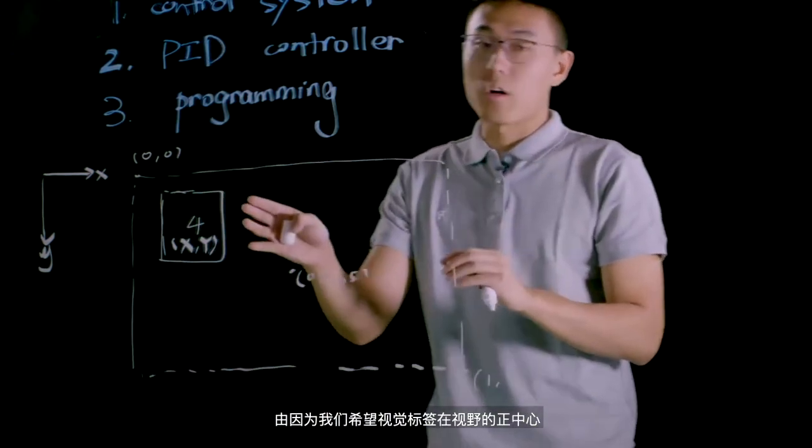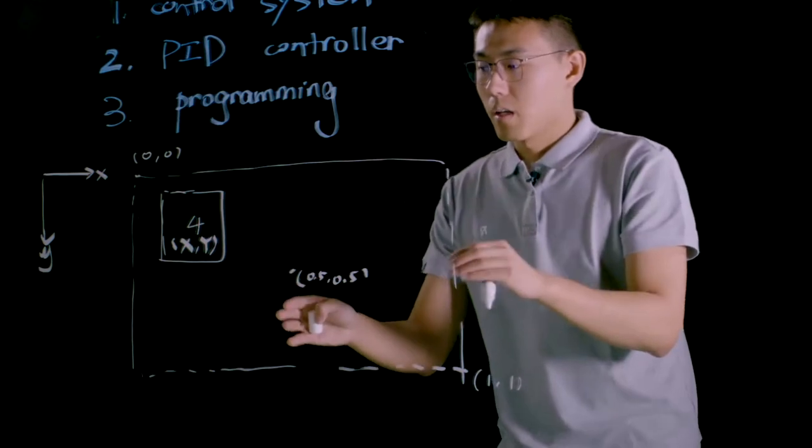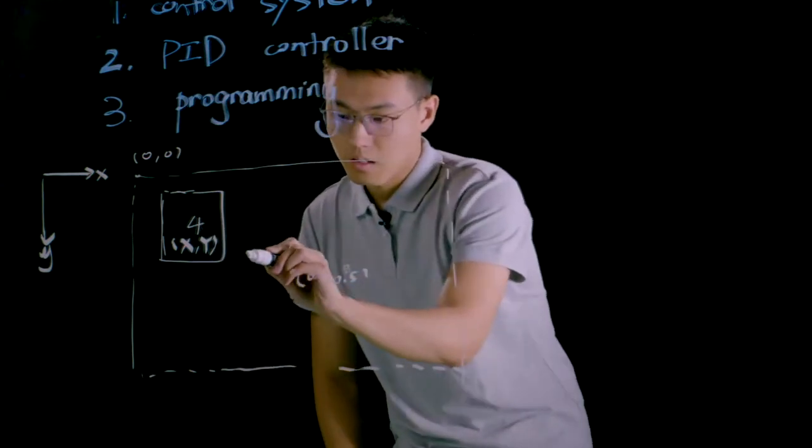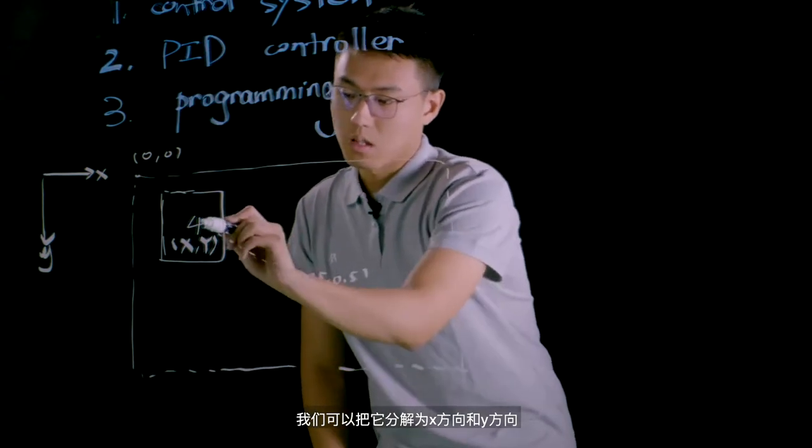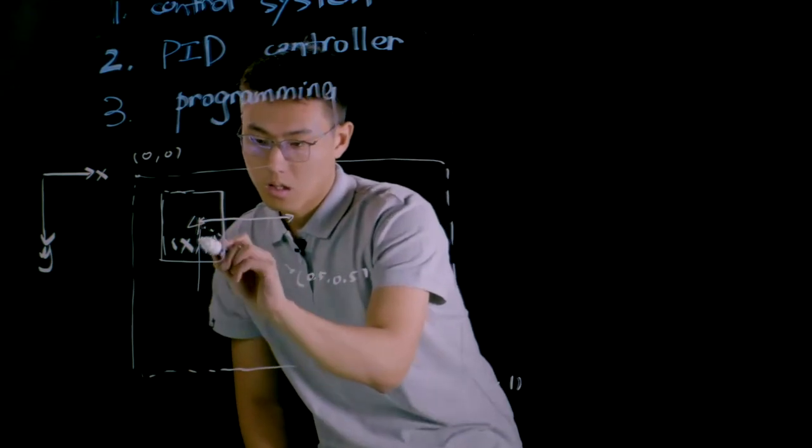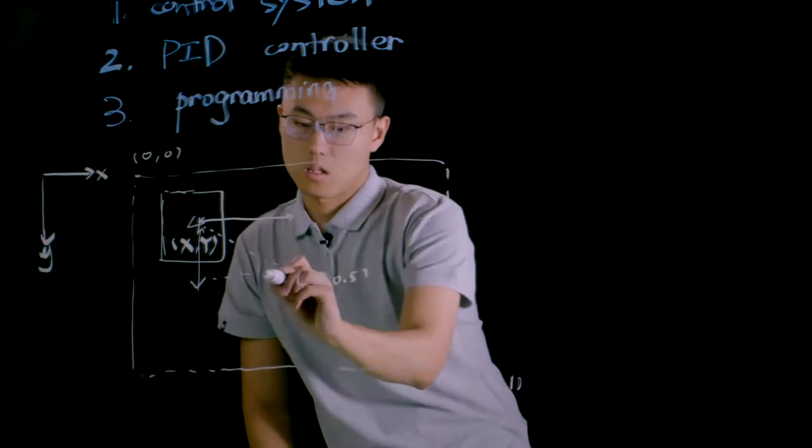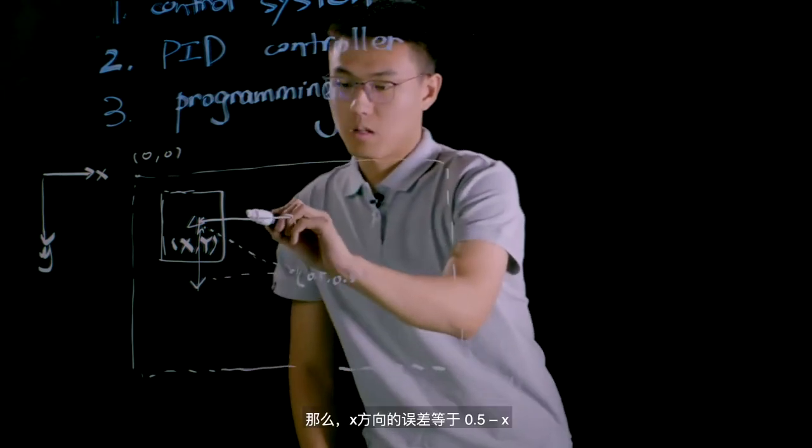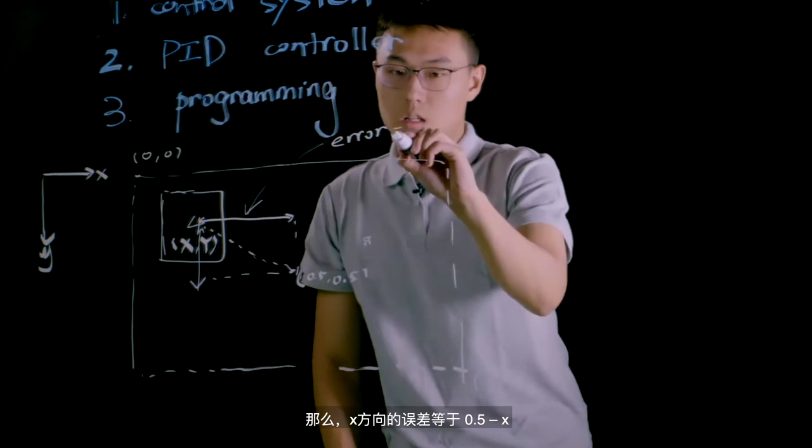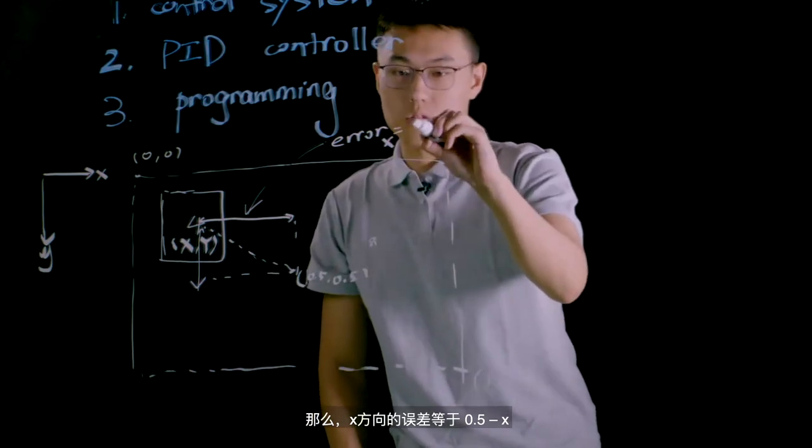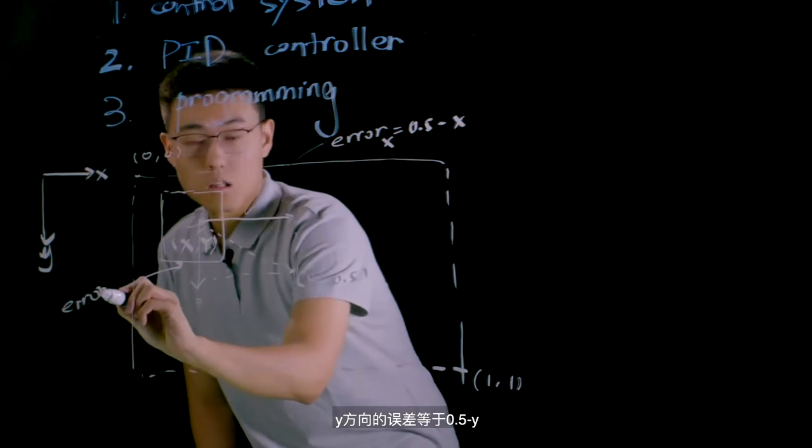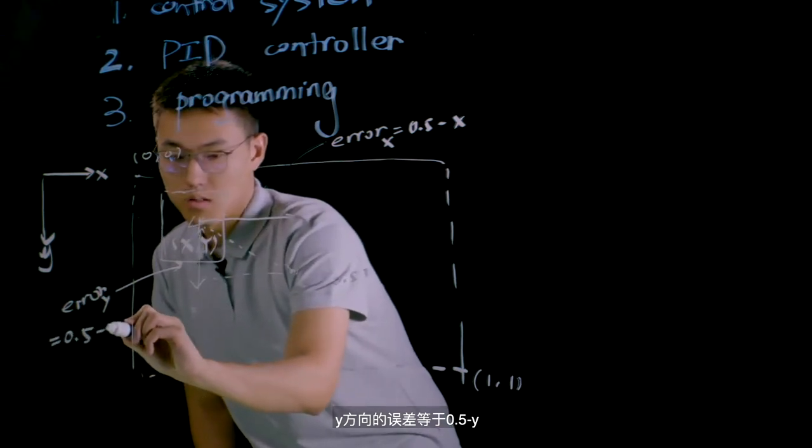So since we want to put this visual marker in the center of the viewport, obviously this is the error we want to eliminate. And we can decompose it into x direction and y direction. Equals to 0.5 minus x. And the error in y direction equals to 0.5 minus y.